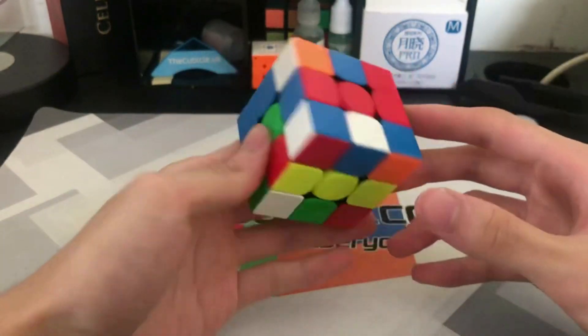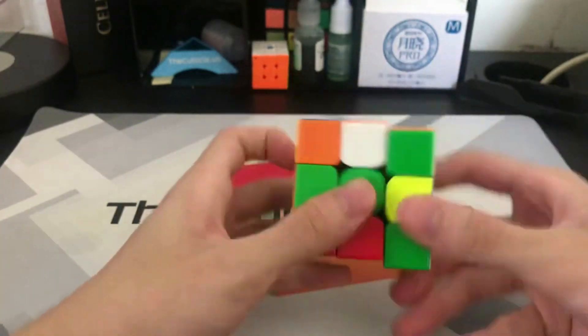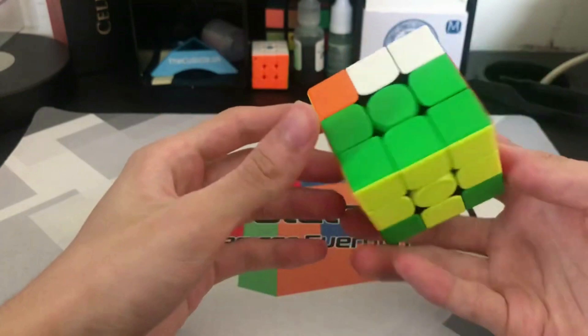Look at this scramble: 3 move, 4 move, x cross.